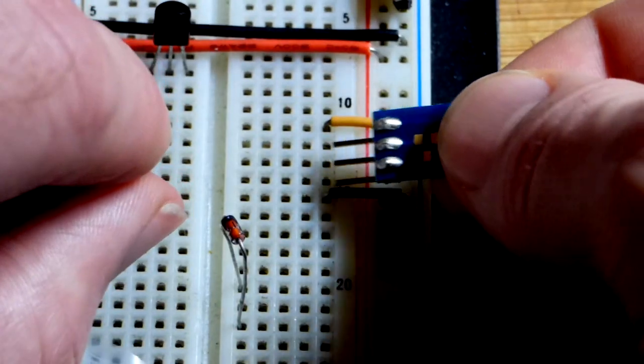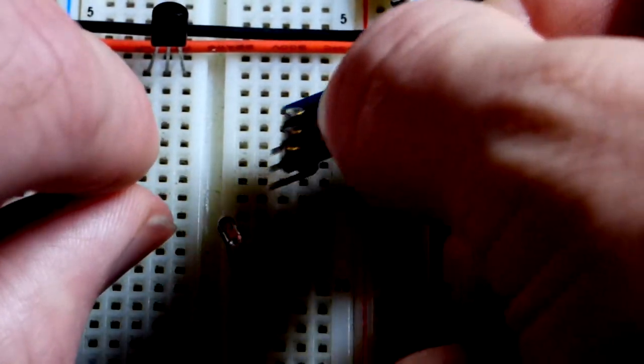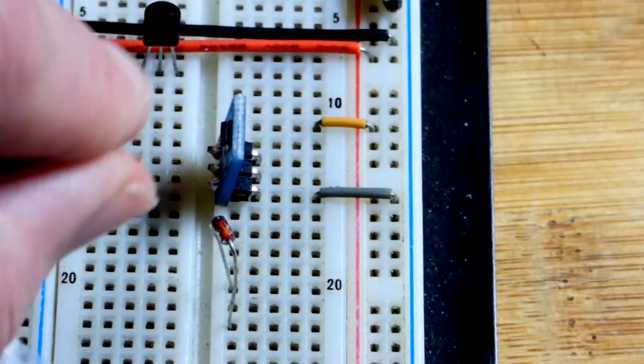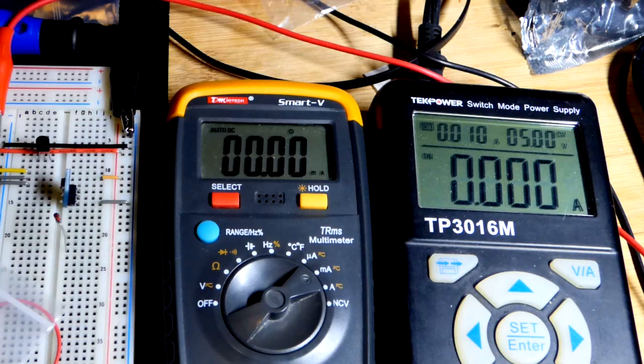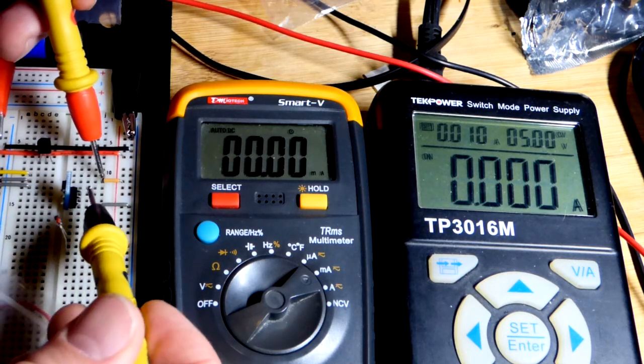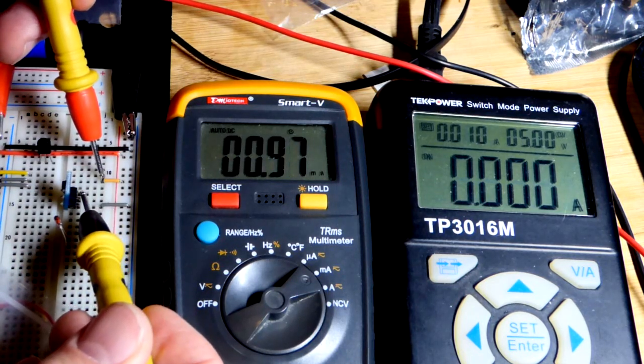So we're going to take the cathode side there and connect it to the negative side of the power supply. The pin there, the anode up there, we're leaving a space. As I said before, this one is rated, this current regulator diode, for 1 milliamp.